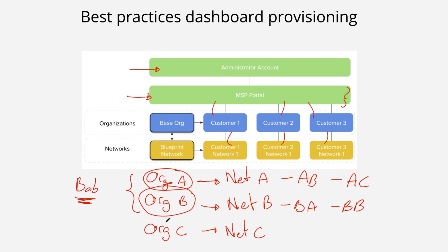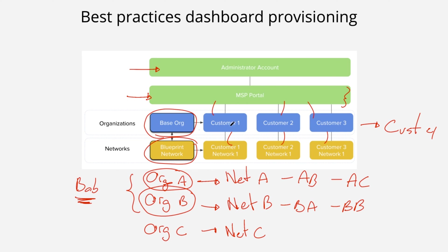You can continue doing that for each customer. And if you know that all your networks and organizations are going to follow a similar template, we always recommend using a base org. Create a base org that is simple enough to replicate, and also create a network blueprint. Once you have that basic configuration set, you have the option to clone that base org whenever you have a new customer — say Customer 4 — and it will bring along the blueprint network you created. That makes provisioning much easier with all the basic configurations ready to go. That's the best way to use the MSP portal and provision new customers in your firm.